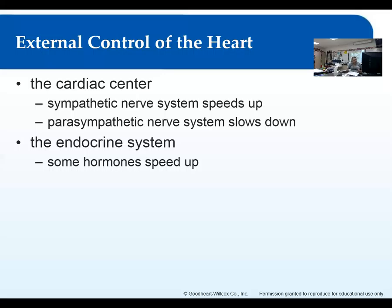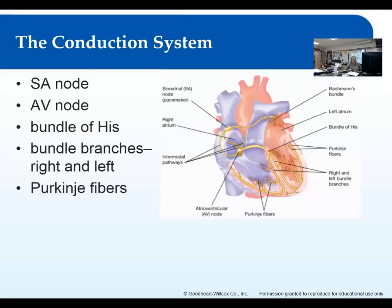The endocrine system — your chemical messenger system, your hormones — some hormones cause the heart to speed up. The adrenal medulla, the central part of the adrenal gland, secretes epinephrine, and these are related to the sympathetic nervous system, so they increase heart rate. The thyroid is another example — it releases thyroxine, which also increases the heart rate and metabolism.